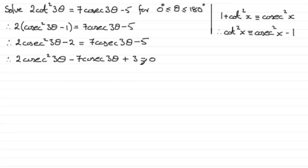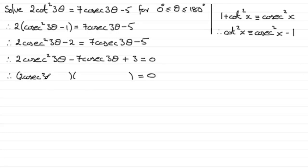We could use the quadratic formula here: cosec(3θ) = (-B ± √(B²-4ac)) / 2a, where a=2, B=-7, and c=3. However, this one factorizes. We get two brackets equal to zero: (2cosec(3θ) - 1)(cosec(3θ) - 3). The -1 and -3 multiply to give +3, and when expanded give -6cosec(3θ) - cosec(3θ) = -7cosec(3θ), which is correct.